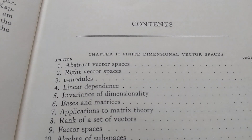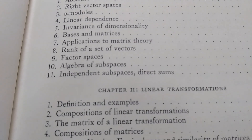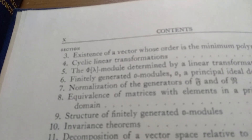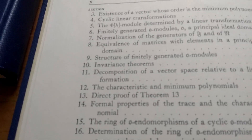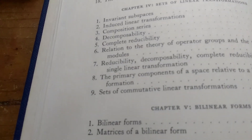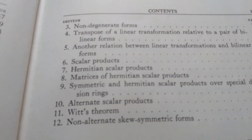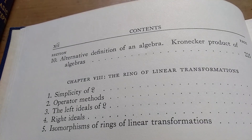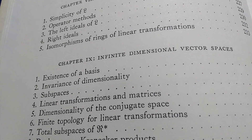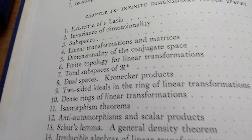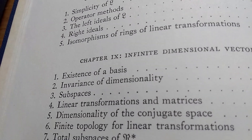Chapter one starts with finite dimensional vector spaces. Chapter two is on linear transformations. Chapter three is on the theory of a single linear transformation. It's kind of interesting because the first book is on basic abstract algebra, and then he does linear algebra — some books start with linear algebra, but not Jacobson. Bilinear forms, lots of topics, tons of stuff. Products of vector spaces. Then infinite dimensional vector spaces — existence of a basis — and Zorn's lemma. Zorn's lemma, if you don't know, is something used to prove that every infinite dimensional vector space has a basis. It's named after Max Zorn.